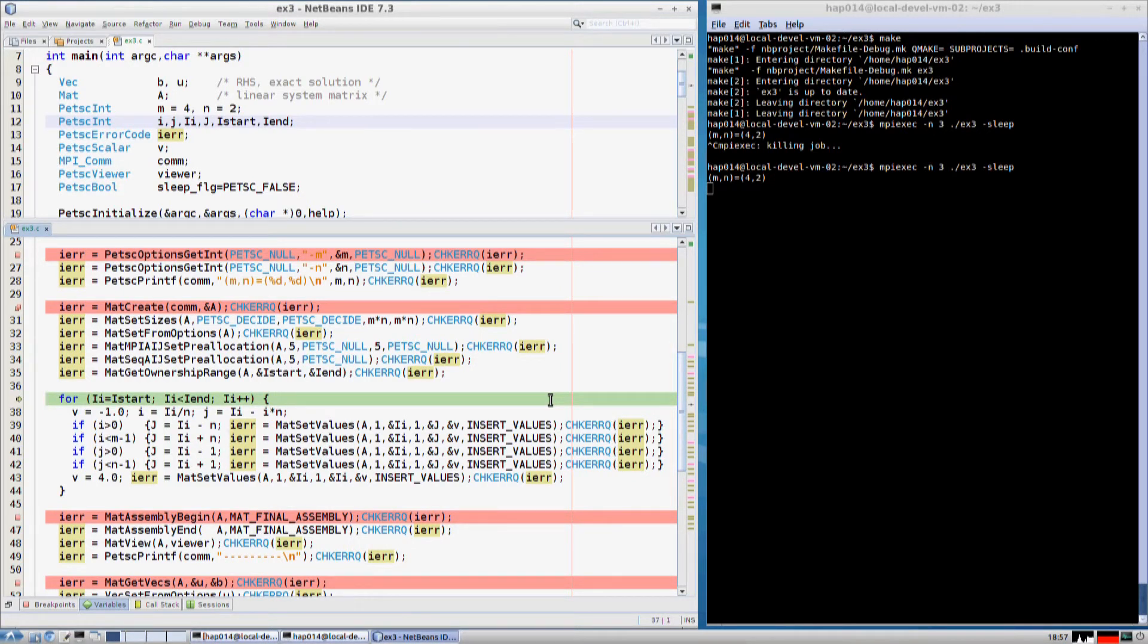Here we store the ownership range. In this loop we call MatSetValues realizing a simple 5-point stencil corresponding to our 2D membrane problem. Note we use the INSERT_VALUES mode, so these calls would replace the eventual original values with the new ones. We will skip the rest of the iteration.